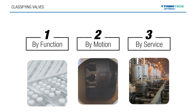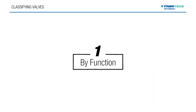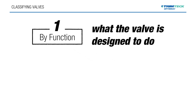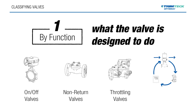Classifying valves by function. The first way to classify valves is by their function, or what the valve is designed to do. There are four primary functional categories: on-off, non-return, throttling, and final control elements.